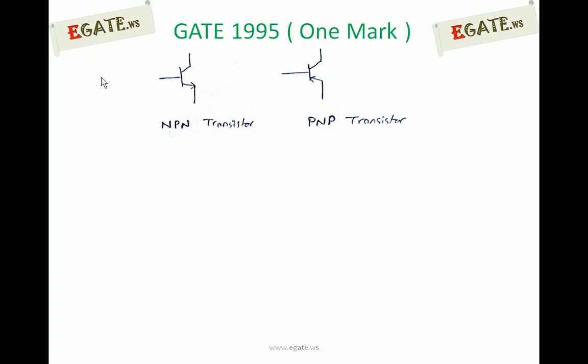We know a transistor can be either NPN or PNP. If the arrow is going upwards, outwards, it is NPN. If the arrow goes downwards, it is PNP transistor.